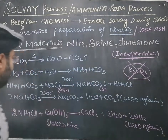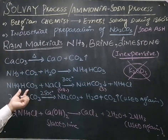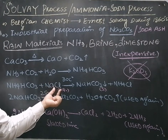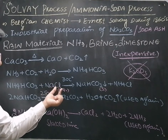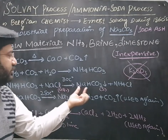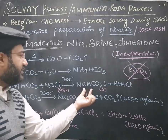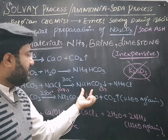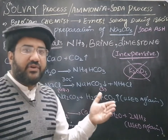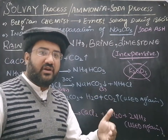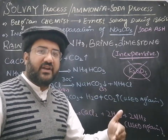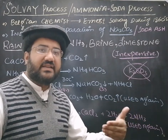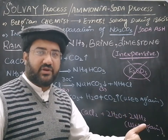This ammonium bicarbonate is then made to react with brine, the concentrated aqueous solution of NaCl, at 30 degrees C to produce sodium bicarbonate and ammonium chloride. Because sodium bicarbonate is a very sparingly soluble salt, it precipitates out and its precipitates are separated by filtration.